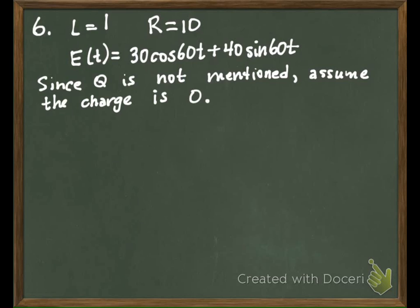So really, our equation is just going to become LI' + RI = E(t). Instead of a second order linear, this time we have a first order linear.